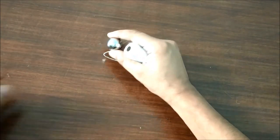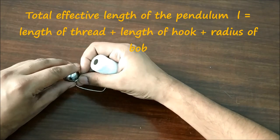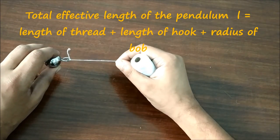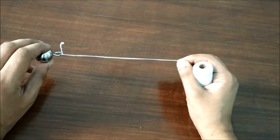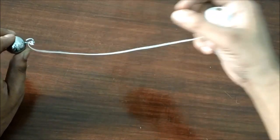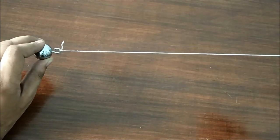Now we have to adjust the length of the thread in such a way that the total effective length of the pendulum is equal to 50 cm. So length of the thread plus length of the hook is equal to 50 cm.